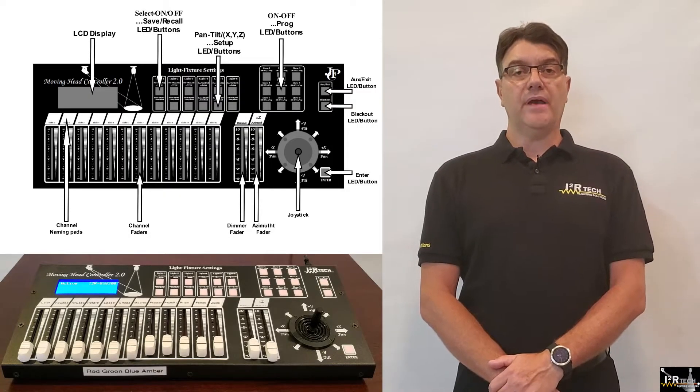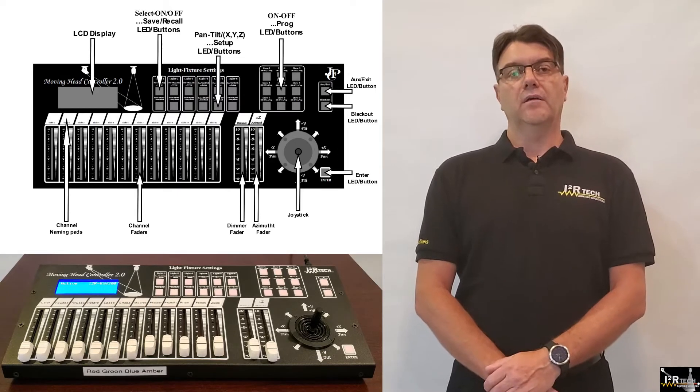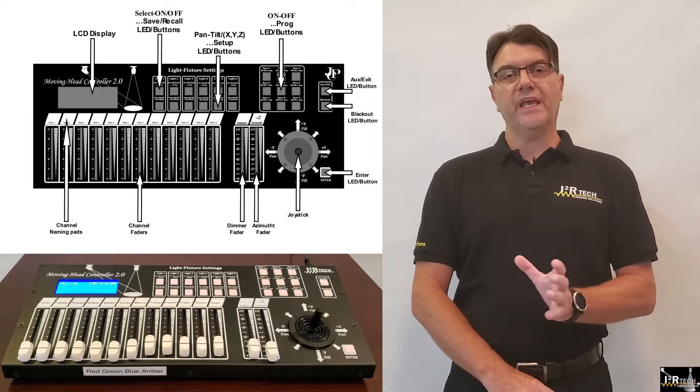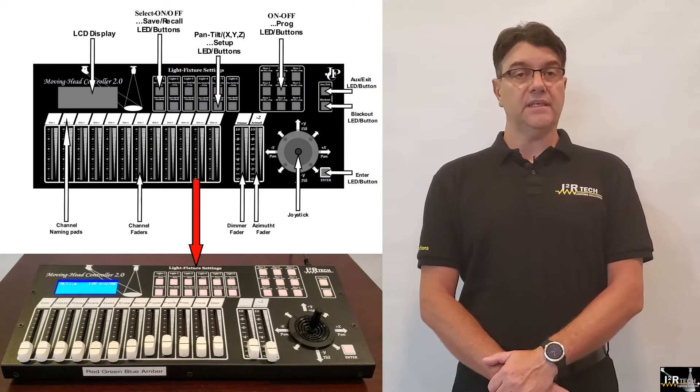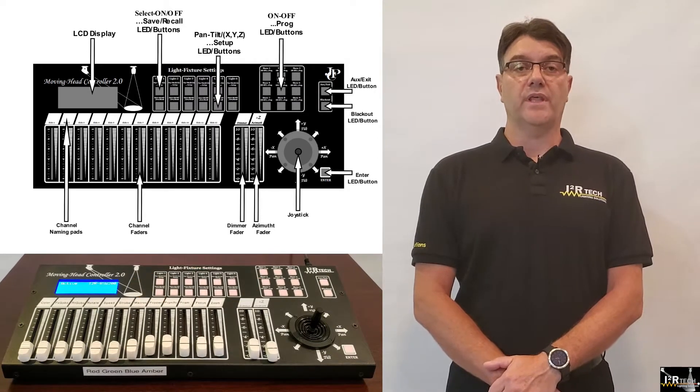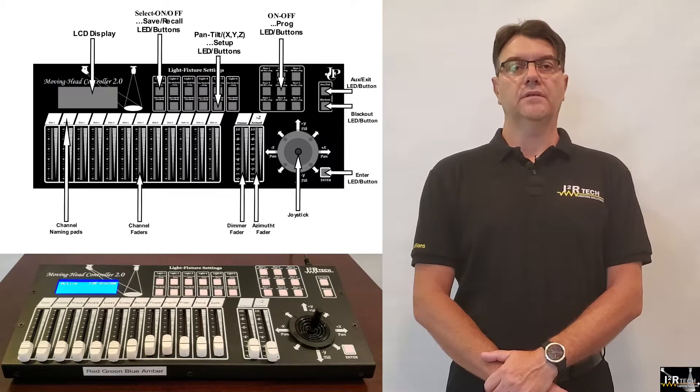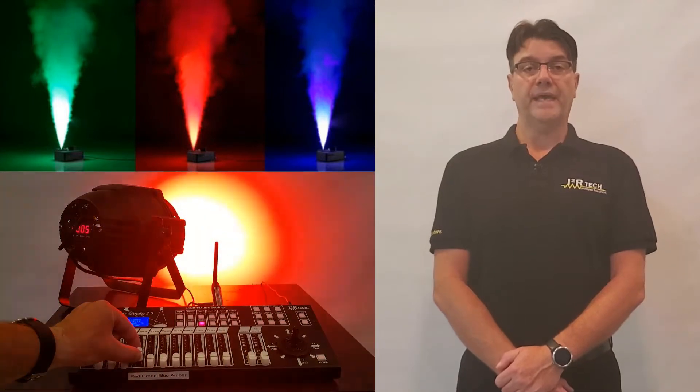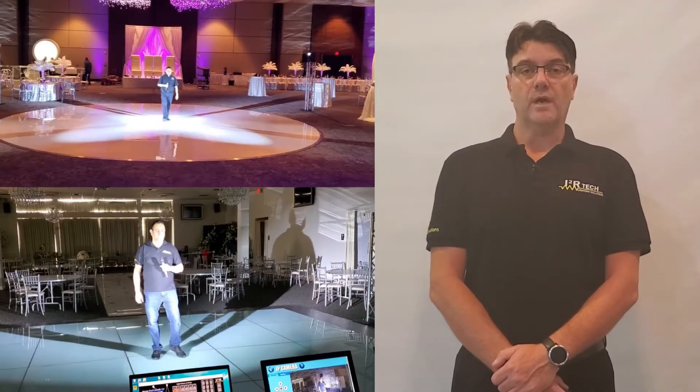Welcome to another i2R Tech Lighting Solutions tutorial video. The Moving Head Controller 2.0 can be set up under a few different modalities. Modalities are functional behaviors, and each one of the six available light groups can be set up as one of these modalities in a mixed configuration fashion. The three modalities are sliders mode, pan and tilt mode, and follow spot mode. They were already introduced and described in the sliders mode tutorial, so make sure to watch that one before you continue here.